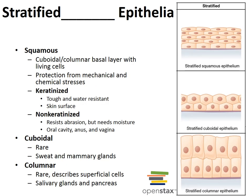If epithelial tissue is stratified, it is named according to the apical layer of cells. Stratified squamous epithelium is composed of several cell layers; the basal cells are cuboidal or columnar and metabolically active, while the surface cells are flattened squamous. It functions to protect underlying tissues in areas subject to abrasion. There are two types: keratinized, where surface cells are full of keratin and dead, and non-keratinized, found in the esophagus, mouth, or vagina. The keratinized variety forms the epidermis of the skin.